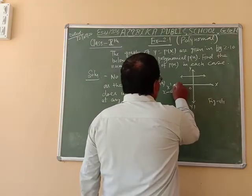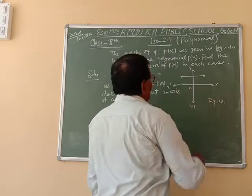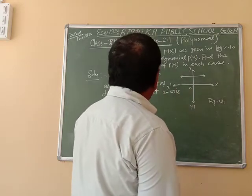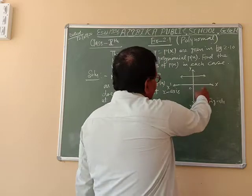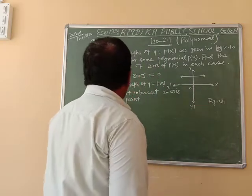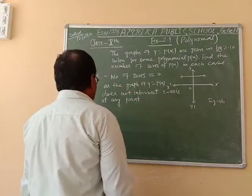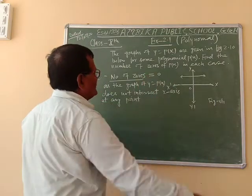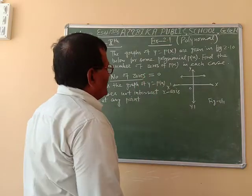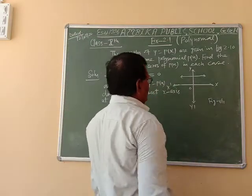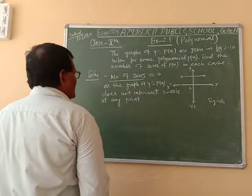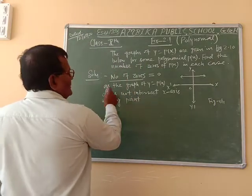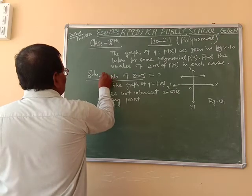According to this figure, we see that the graph of y of p(x) does not intersect the x-axis at any point. So the number of zeros is equal to 0, because y does not intersect the x-axis at any point. This is question number 1.